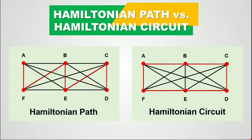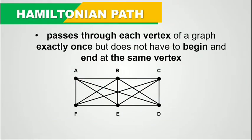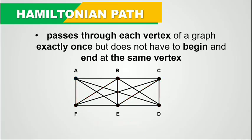When we talk about a Hamiltonian path, it is a path that passes through each vertex of a graph exactly once, but does not have to begin and end at the same vertex. For example, if we start at point A and then we go to F, to B, to E, to C, and then to D — this is an example of a Hamiltonian path. We could also start at vertex A and go to B, to C, to F, to E, and then to D. So in a Hamiltonian path, we pass through each vertex exactly once and do not have to begin and end at the same vertex.